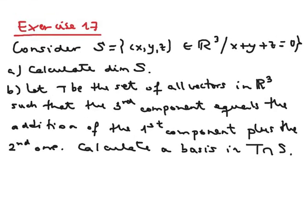In exercise 17 we are asked to consider the vector subspace S formed by all the vectors in R3 such that x plus y plus z equals zero. We must calculate the dimension of S. Let T be the set of all vectors in R3 such that the third component equals the addition of the first component plus the second one. We must calculate a basis in the intersection of T with S.